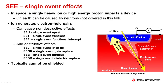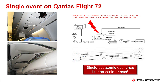A single event effect occurs when a single heavy ion or high-energy proton impacts the device, creating a trail of hole-electron pairs which can be swept up into the electric field of the device. A heavy ion strike can cause many different kinds of effects — non-destructive and destructive — and typically the heavy ions and protons cannot be shielded. Here is an extreme example: the flight control computer of a jet had a single event upset that caused the plane to go into a steep dive, causing damage and sending 18 people to the hospital.